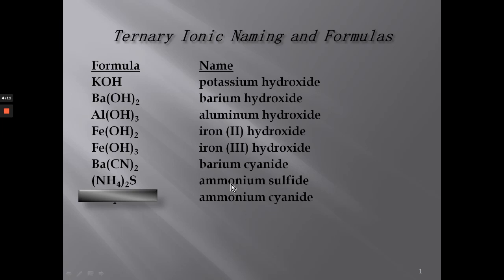Ammonium cyanide is very similar to the previous examples. We already know the formula for ammonium and its oxidation is plus one. Cyanide is minus one. Since they cancel, I don't need any parentheses — I can just write the two polyatomic ions together.